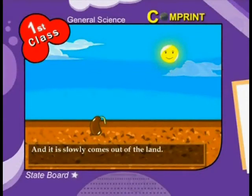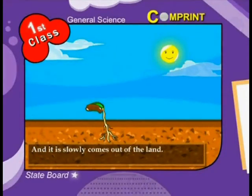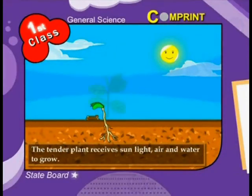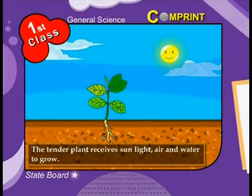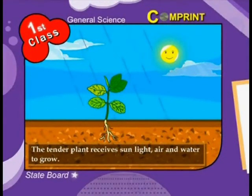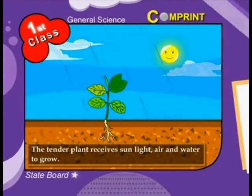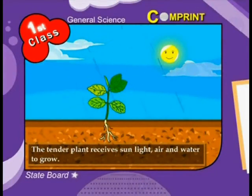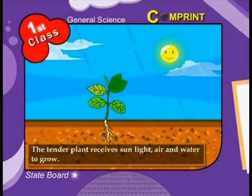And then it slowly comes out of the land. The tender plant receives sunlight, air and water to grow. The seeds are of different shapes and sizes.